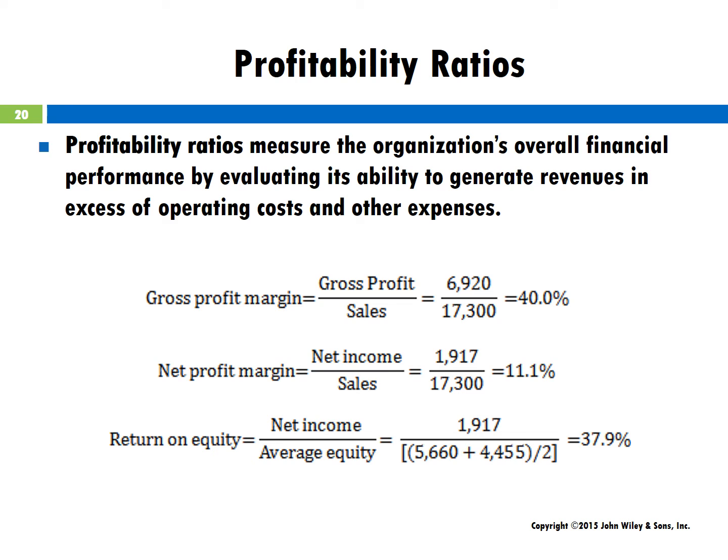Profitability ratios measure the organization's overall financial performance by evaluating its ability to generate revenues in excess of operating costs and other expenses. Gross profit margin indicates gross profits compared to sales. Net profit margin is around 5%, but varies by industry. Return on equity indicates a firm's net income as compared to average equity. A firm's gross profit margin is an indication of how well it is controlling its expenses or costs of inventory and the manufacturing efficiency of its products. For service industries with low overhead, they tend to be more recession-resistant with higher profit margins.